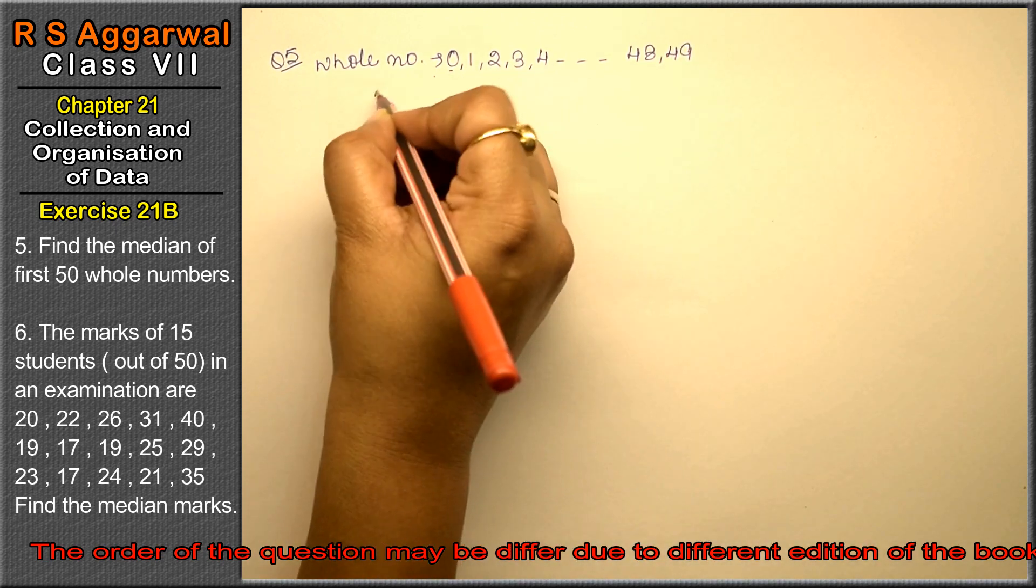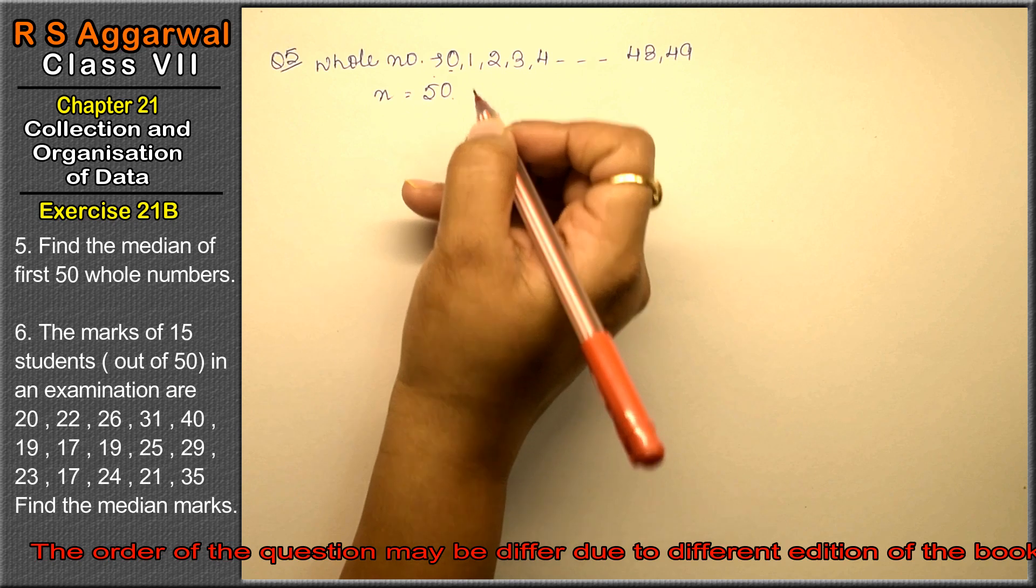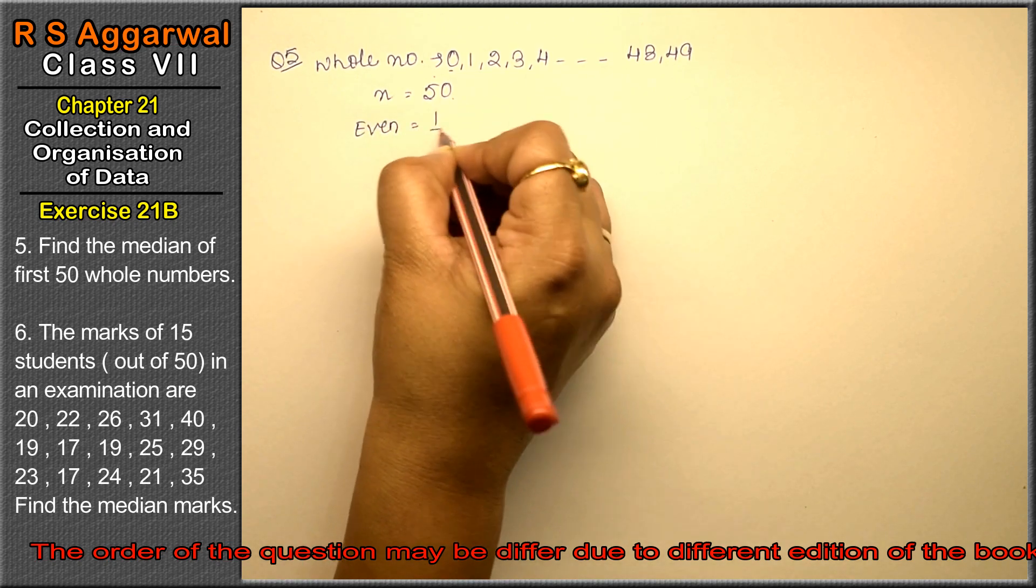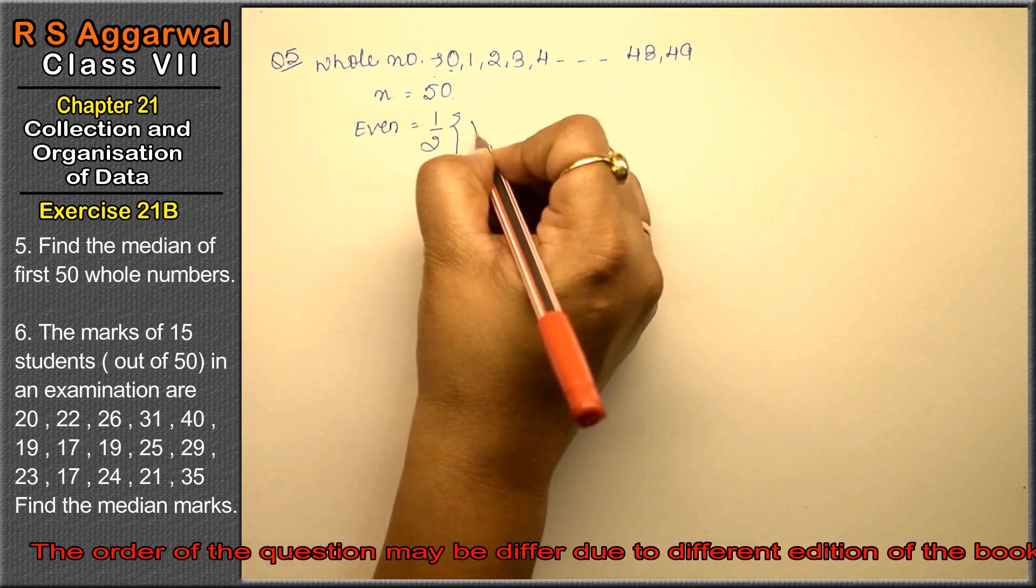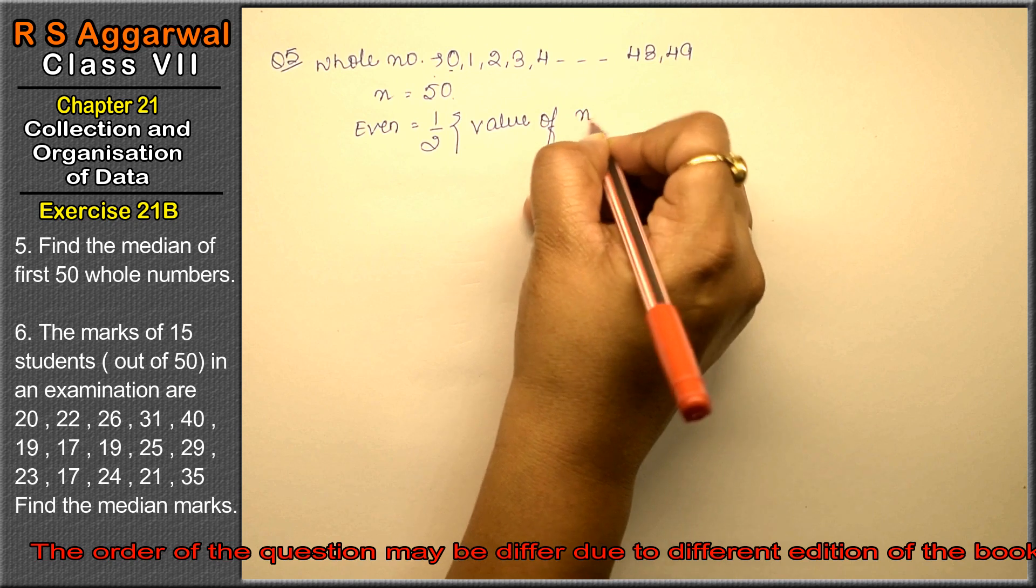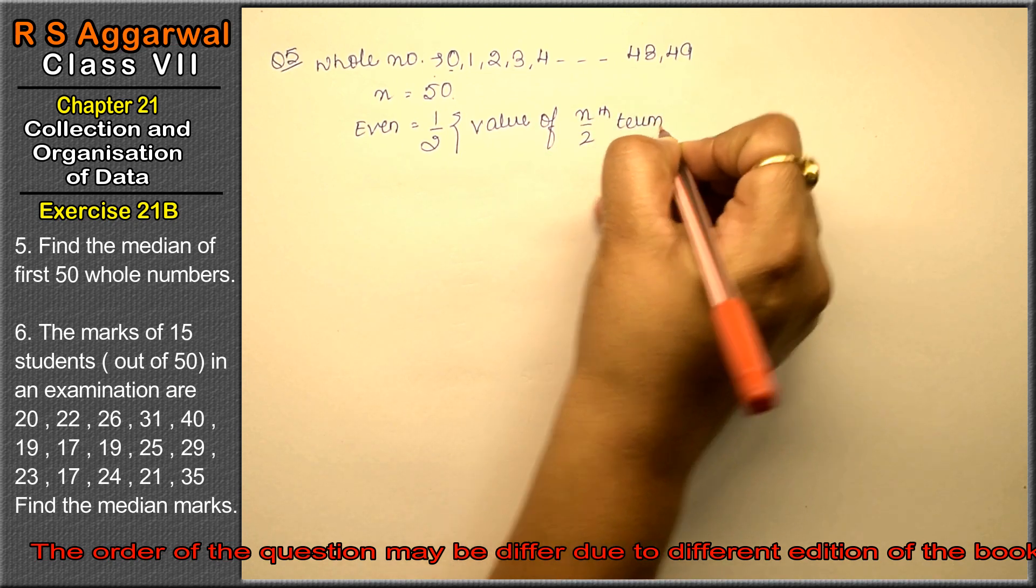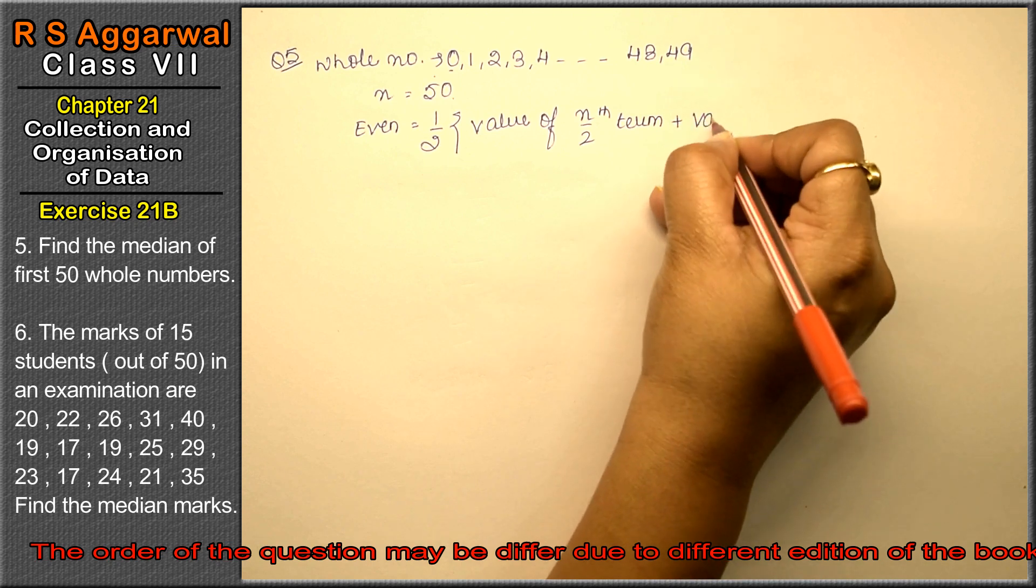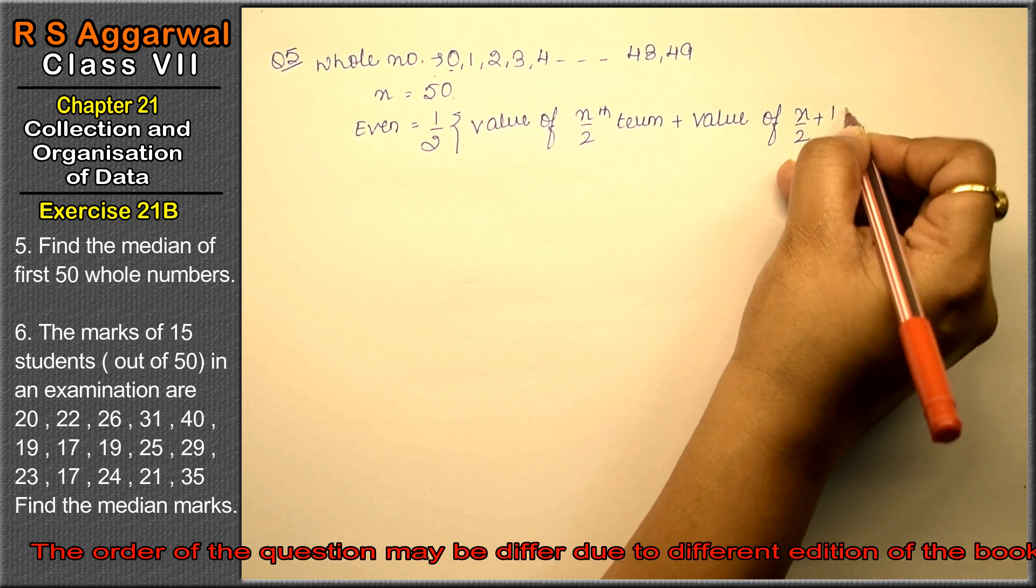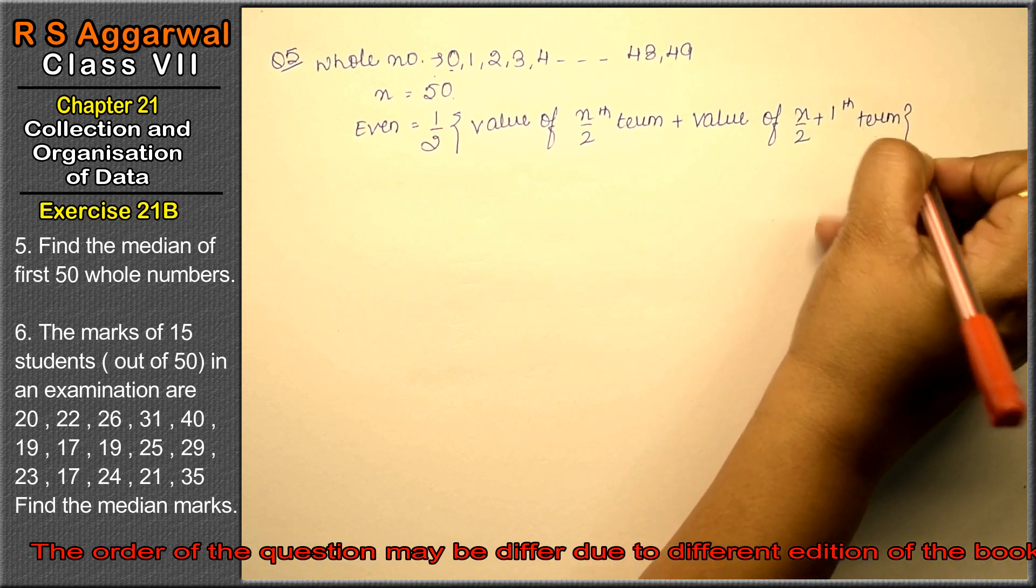So, we know that n is 50. This is an even number. So what happens in our case? In our case, it's half value of n/2 th term plus value of (n/2 + 1) th term. Right, friends?